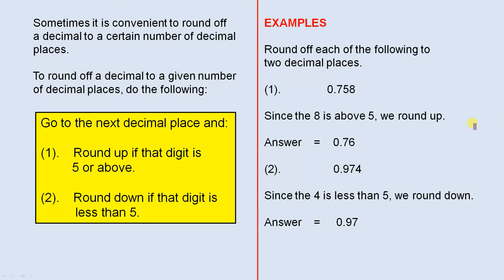So let's see how these work. Let's look at some examples. Number 1: round off each of the following to two decimal places.